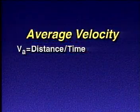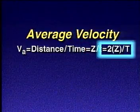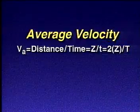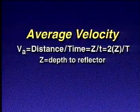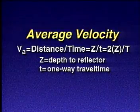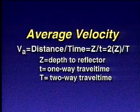Average velocity equals depth divided by one-way travel time, or twice the depth divided by the two-way travel time. Throughout this video, we'll use the notation Z for depth to reflector, lowercase t for one-way travel time, and uppercase T for two-way travel time.